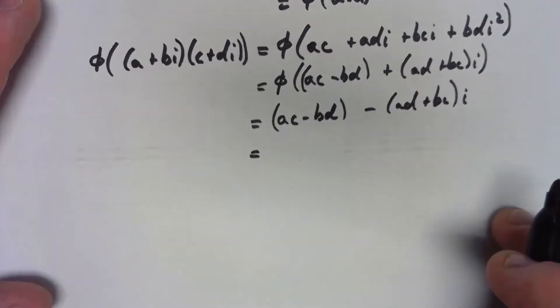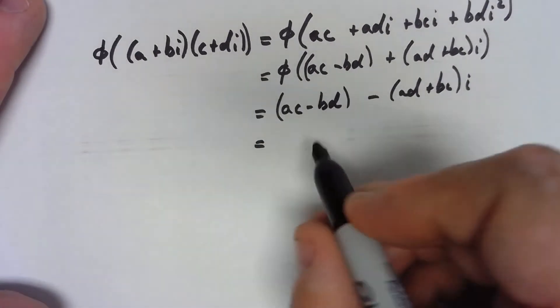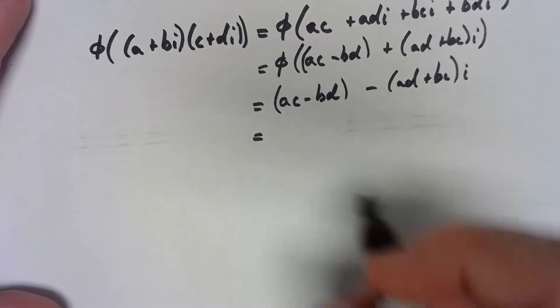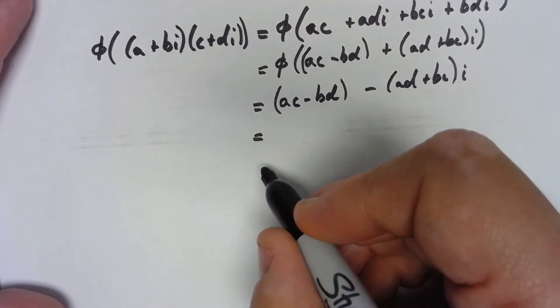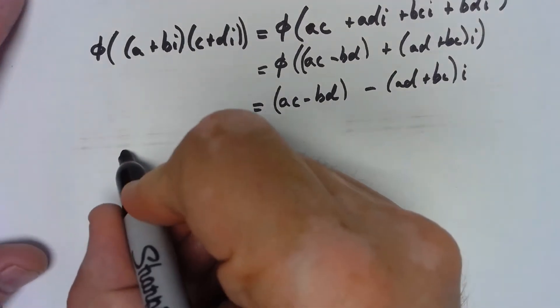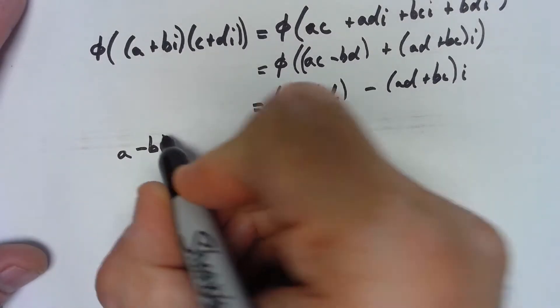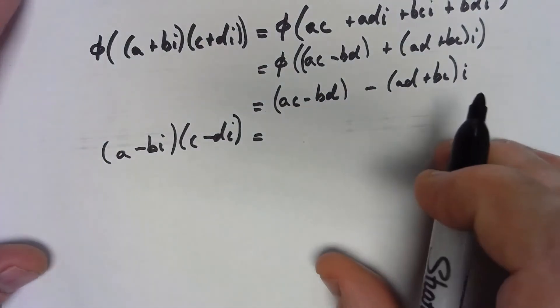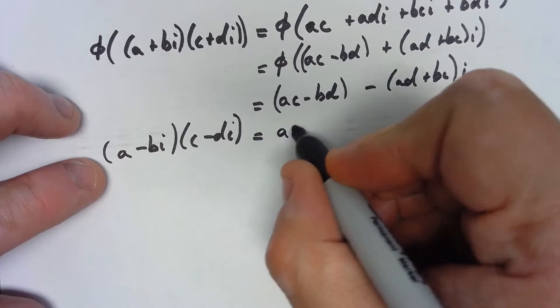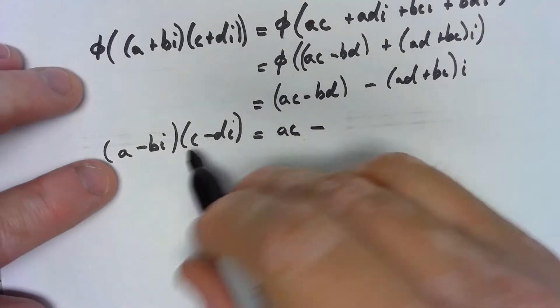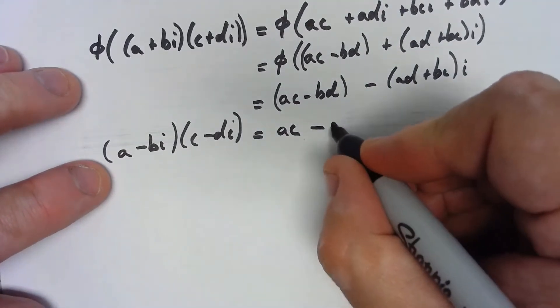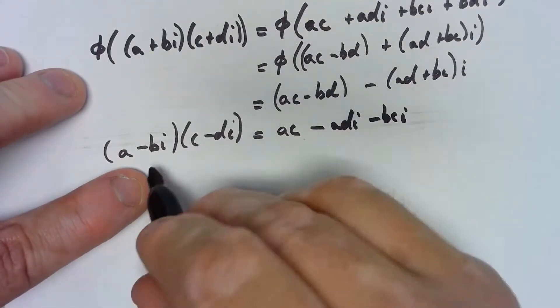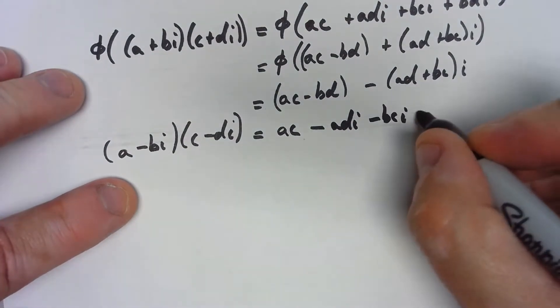And so that's the same thing as if we just do the math out. If we take (a - bi) times (c - di), that's going to equal (ac - bd) - (ad + bc)i. And there you can see it.